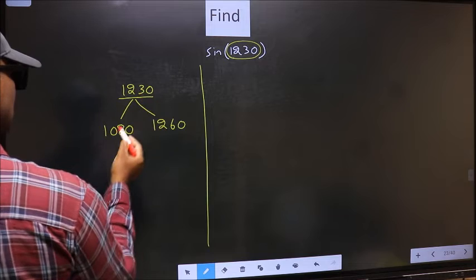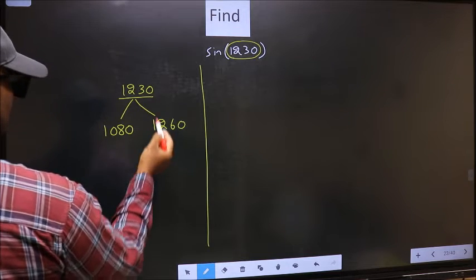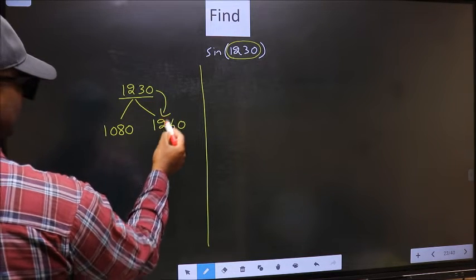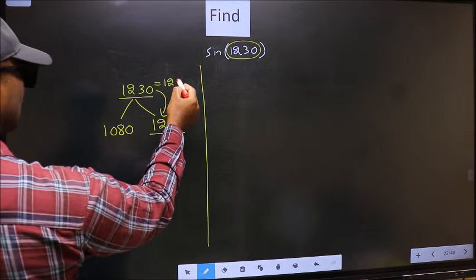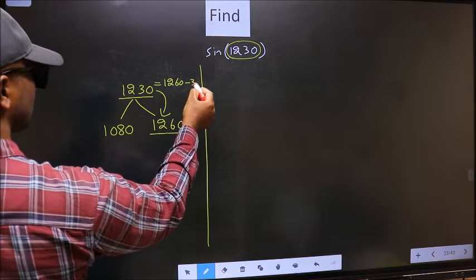Now 1230 is close to which number. This is close to 1260. So 1230 now should be written as 1260 minus 30.